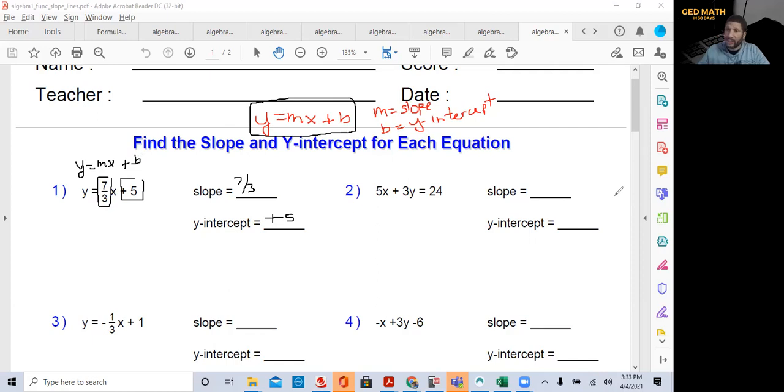If it's in slope-intercept form, all you're doing is make sure it's in that form. Whatever's in front of your variable is your slope. Whatever's left is your y-intercept. Very easy. So let's try another one. If you look at number two, that is not in slope-intercept form. So I'll show you how to do that in the next video.